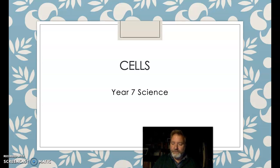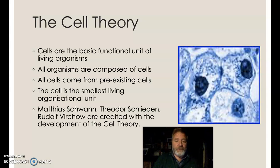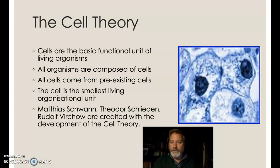Just quickly glossing over cell theory — although it's really important to biologists — we have this theory that's been developed by a whole lot of scientists. Matthias Schleiden, Theodor Schwann, and Rudolf Virchow are credited with pulling it all together, but it's the work of hundreds of scientists, particularly in the 1800s.